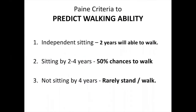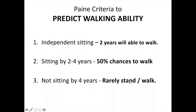We predict walking ability from sitting ability. If the child sits independently by two years, he will be able to walk and run. If he can sit by up to four years, he has a 50% chance to walk. We must improve minor deficiencies before four years to maximize his chance. If he is not able to sit by four years, he may not stand and walk.